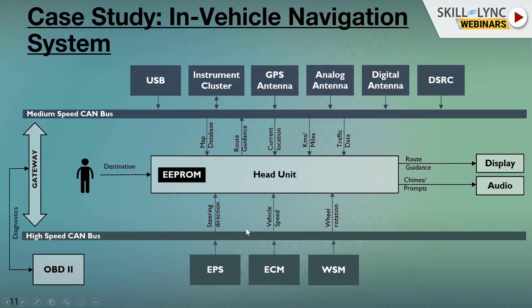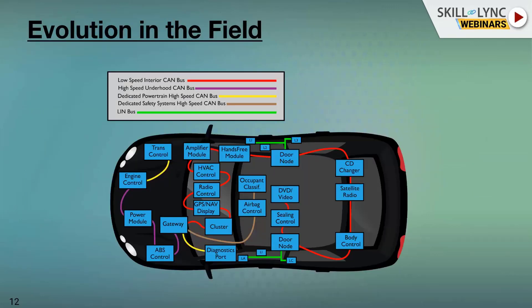This is a good picture of the overall bus architecture. A low speed bus is represented in red with ECUs running through it. On the high speed bus you have a gateway, ABS for brakes, engine, and transmission — which has its own dedicated powertrain bus. More or less, most ECUs are on the medium speed bus.